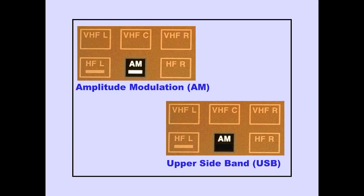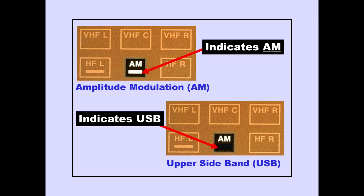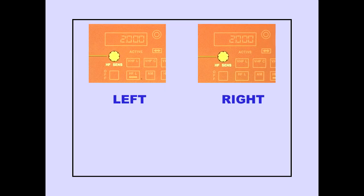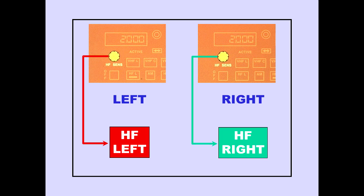Each HF has the capability of transmitting amplitude modulation (AM) or upper sideband. If AM is selected, a white bar illuminates. If upper sideband is selected, the white bar on the AM switch is extinguished. Upper sideband transmission allows communication over greater distances. Each HF radio also has a sensitivity control. The HF sensitivity control on the left radio tuning panel adjusts the left HF sensitivity. The HF sensitivity control on the right radio tuning panel adjusts the right HF sensitivity when a right HF radio is installed.